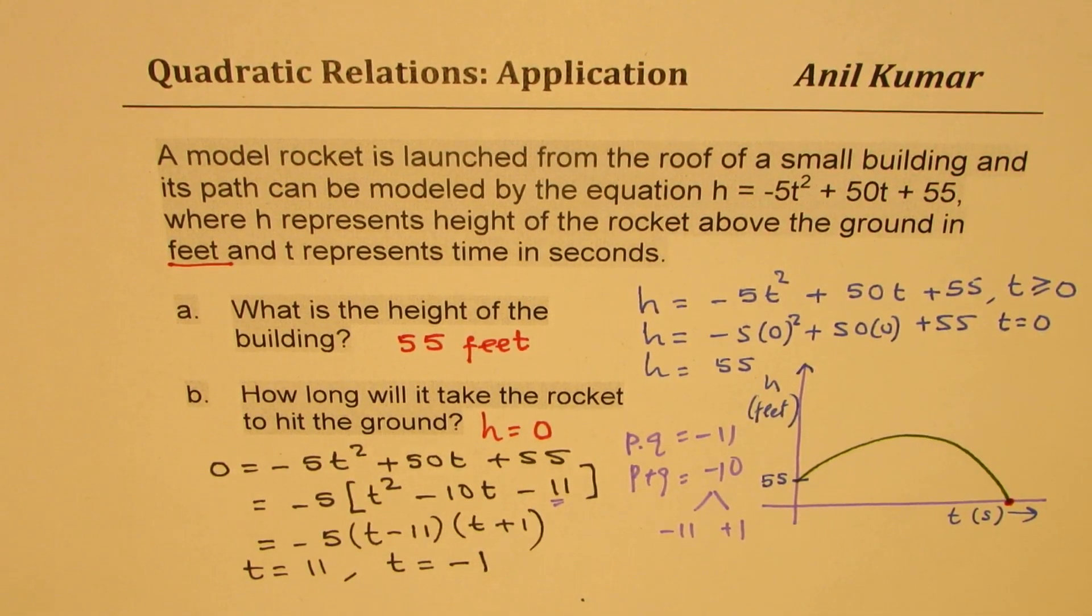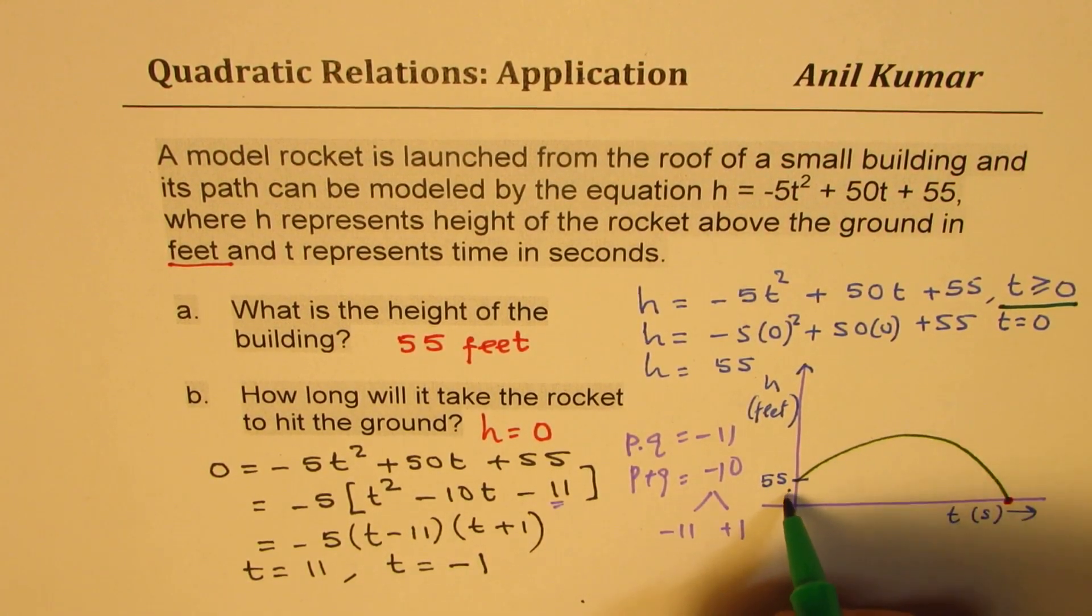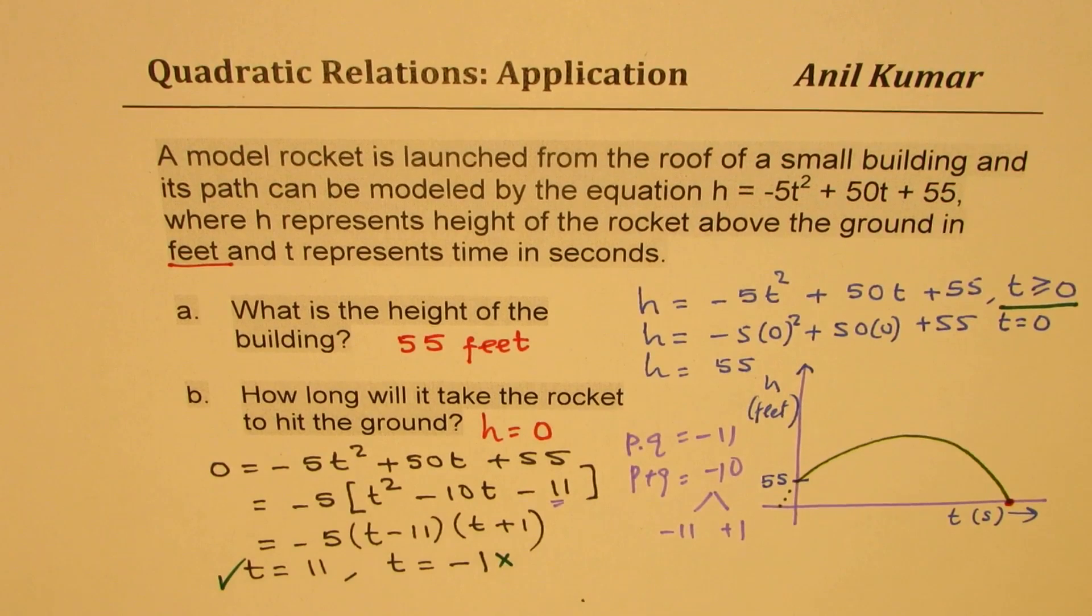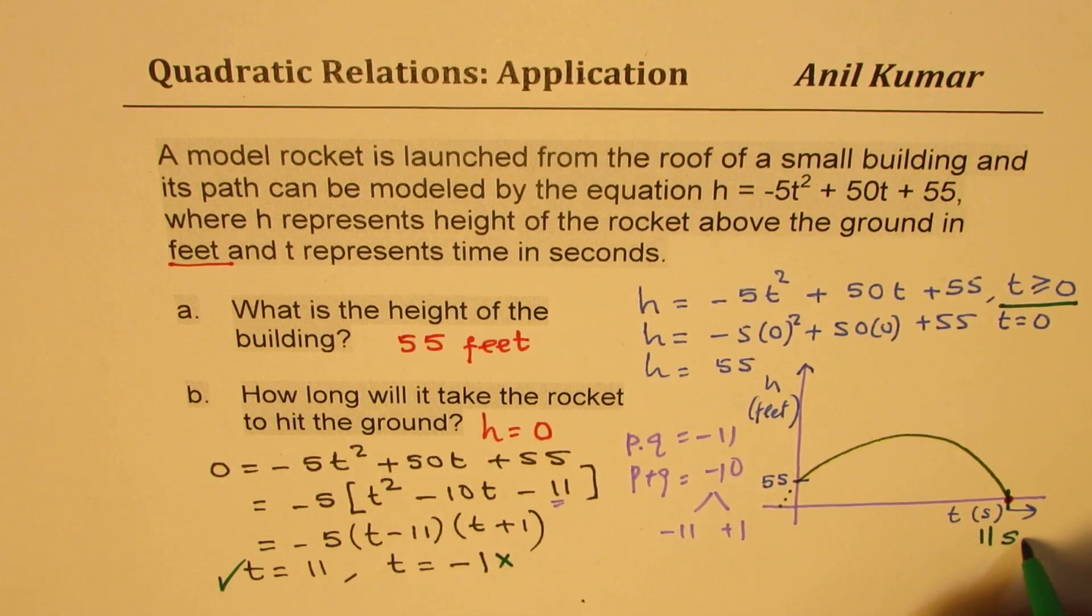Of course, that minus 1 does not make sense since we know T is greater than or equal to 0. It really means that it could have been. This is not valid. However, that is correct. So this time here is 11 seconds.